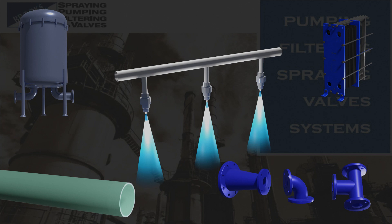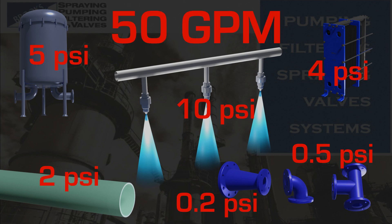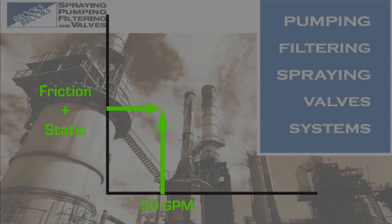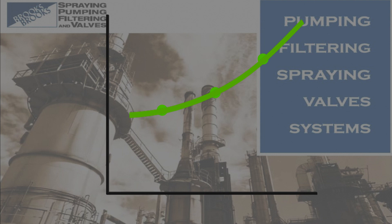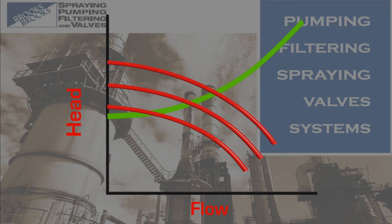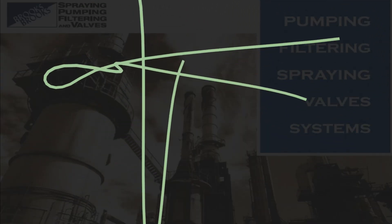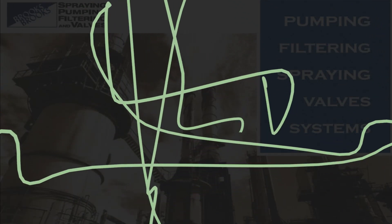Looking at the system as a whole, we can add the resistances together to get the total frictional losses. At a common flow rate — say 50 gallons per minute — sum each of the components' frictional losses together, then add the static head and plot this on the pump curve. Repeat this process for other flow rates. If we connect all these points with a smooth line, we will have a system resistance curve. Now we can estimate what pump speed or impeller diameter we should use to achieve a particular flow and head.